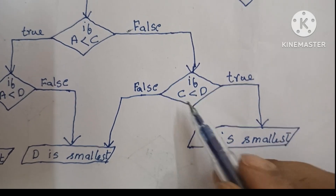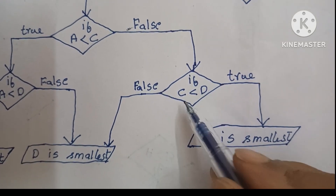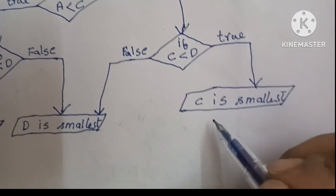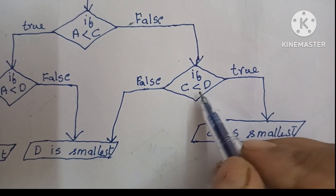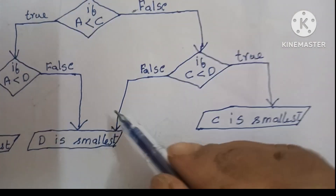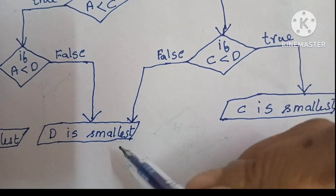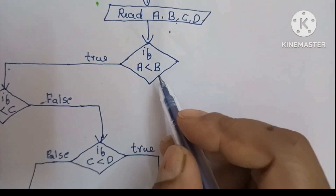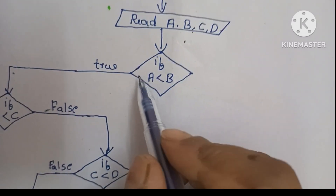If C less than D is true, we print C is smallest. If this condition is false, D is smallest — we have to print D is smallest. Next, going back: if A less than B is true, we execute that part.